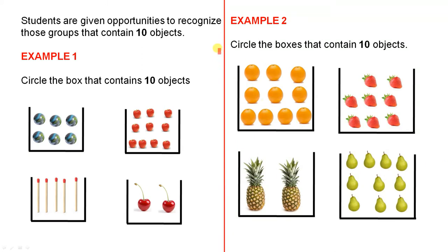Students are given opportunities to recognize those groups that contain 10 objects. For the first example, students would be asked to circle the box that contains 10 objects. When they hear the word box, they should recognize that it's only one box, and I'm sure they will circle this one.